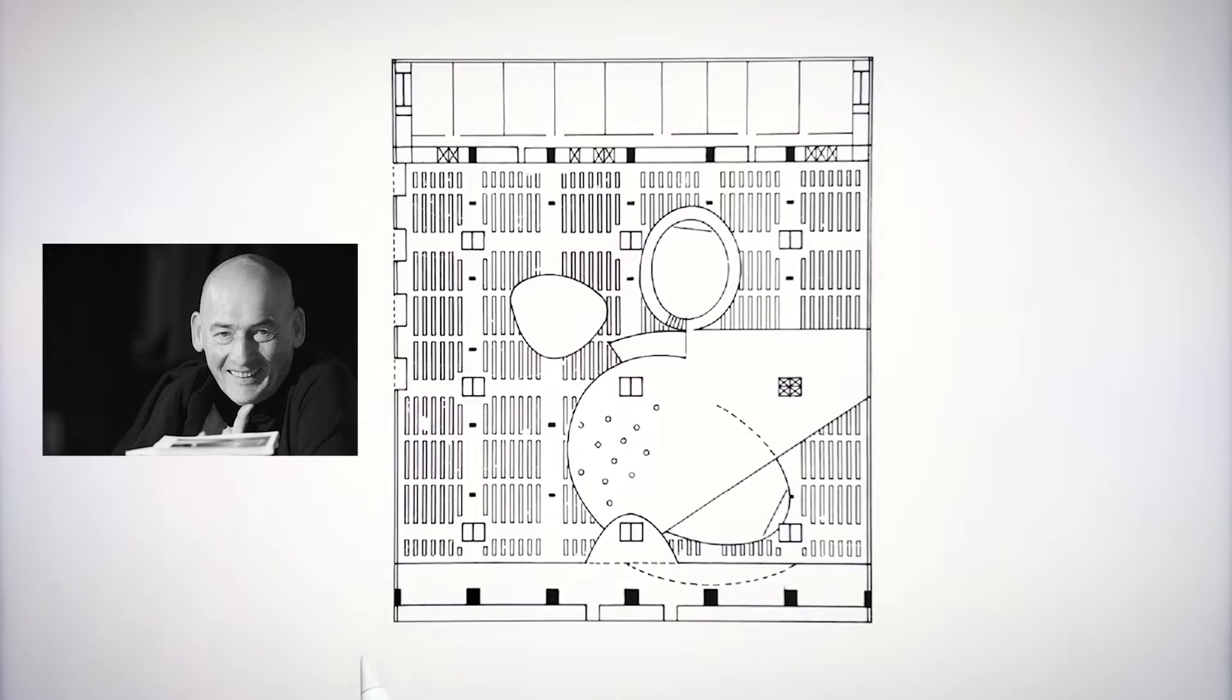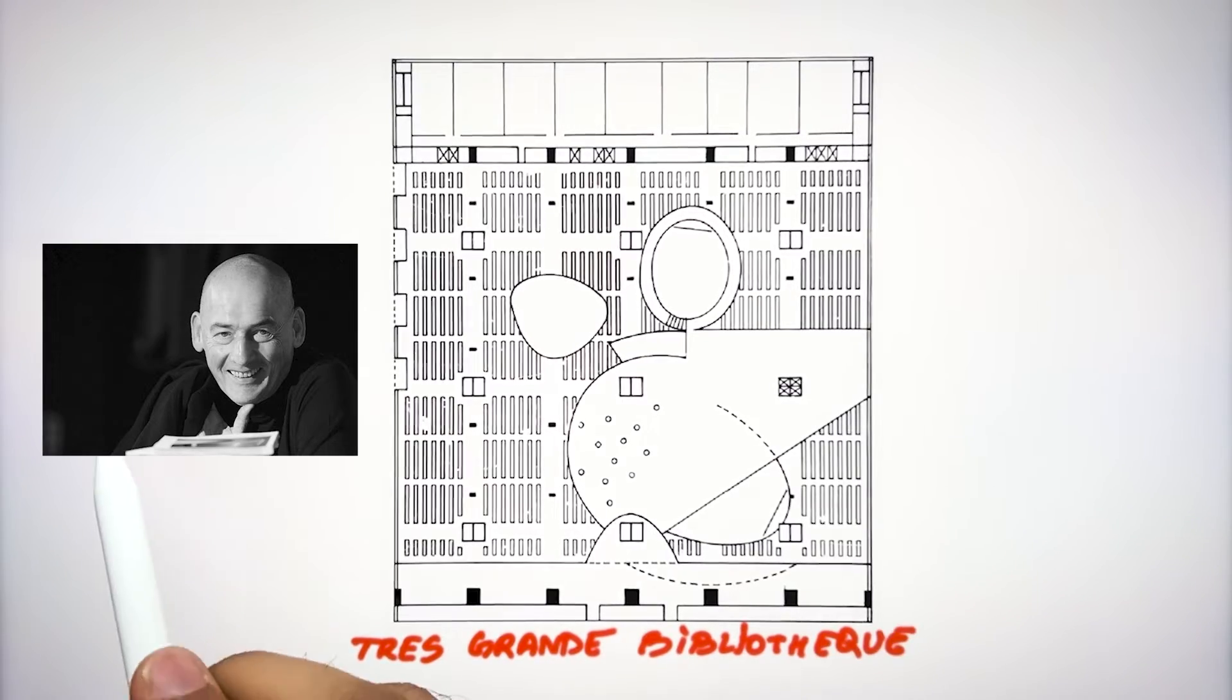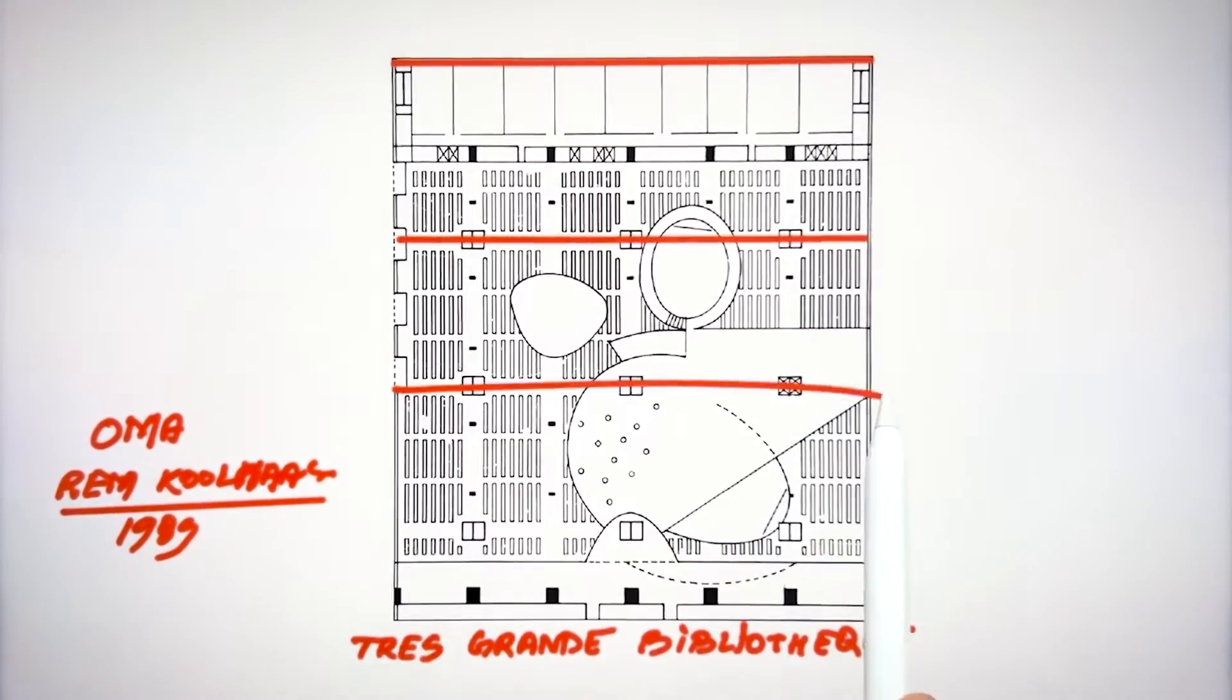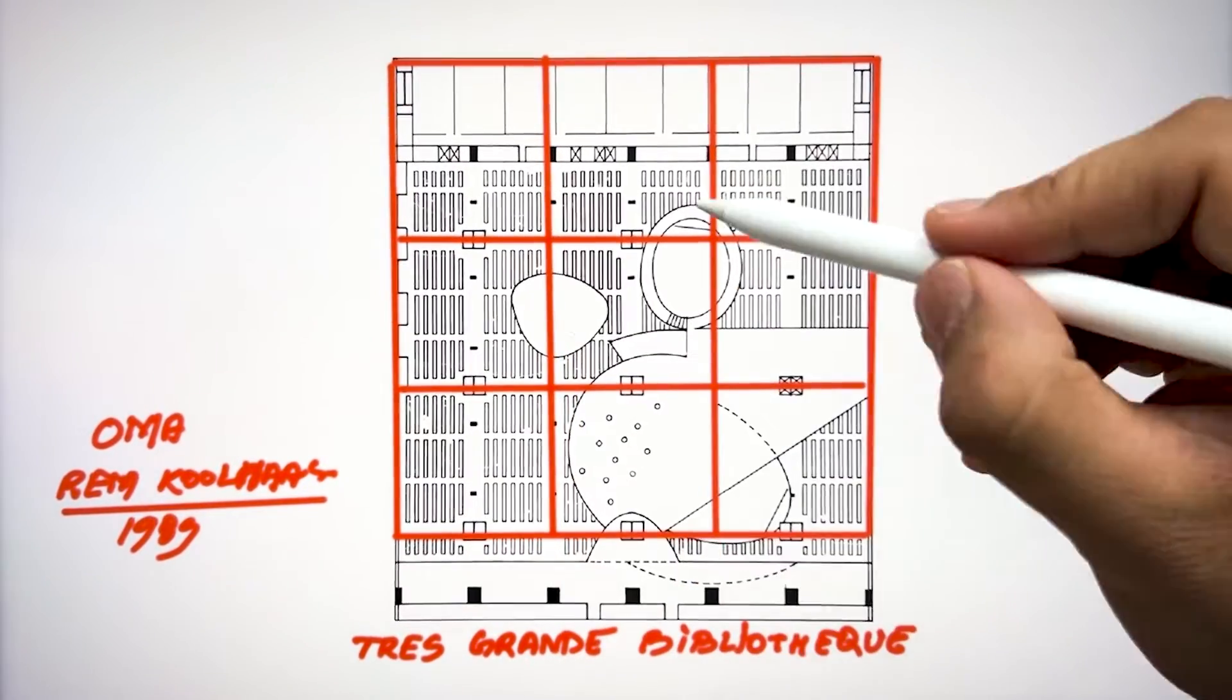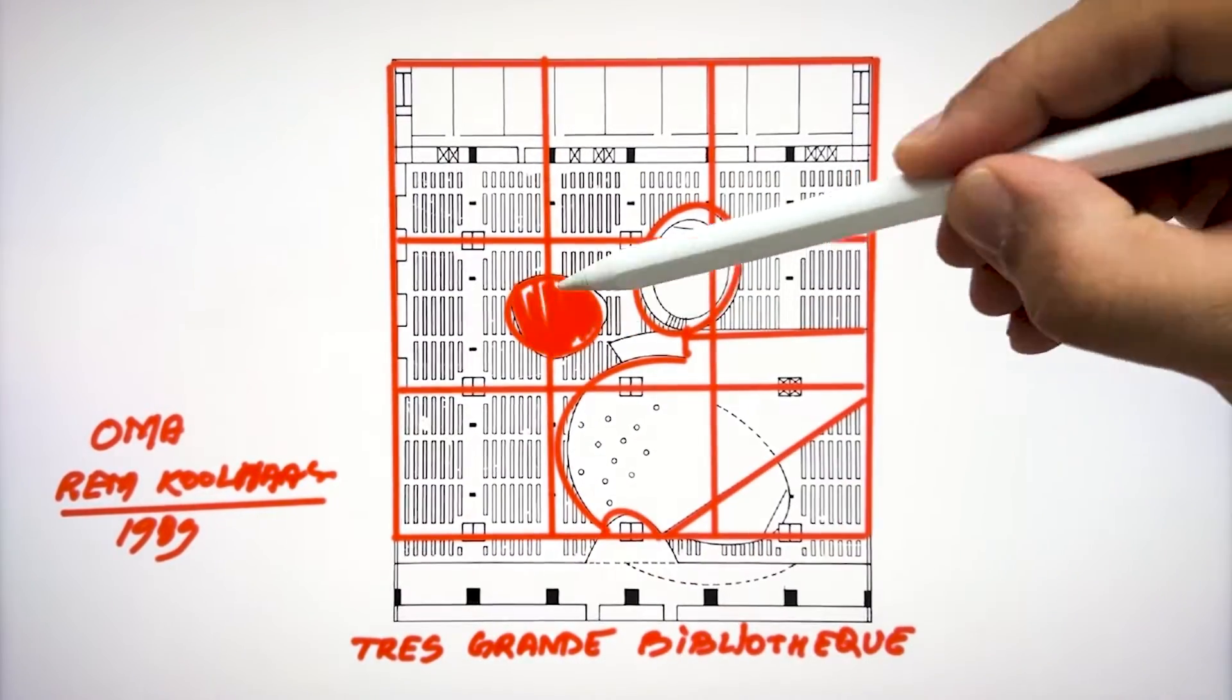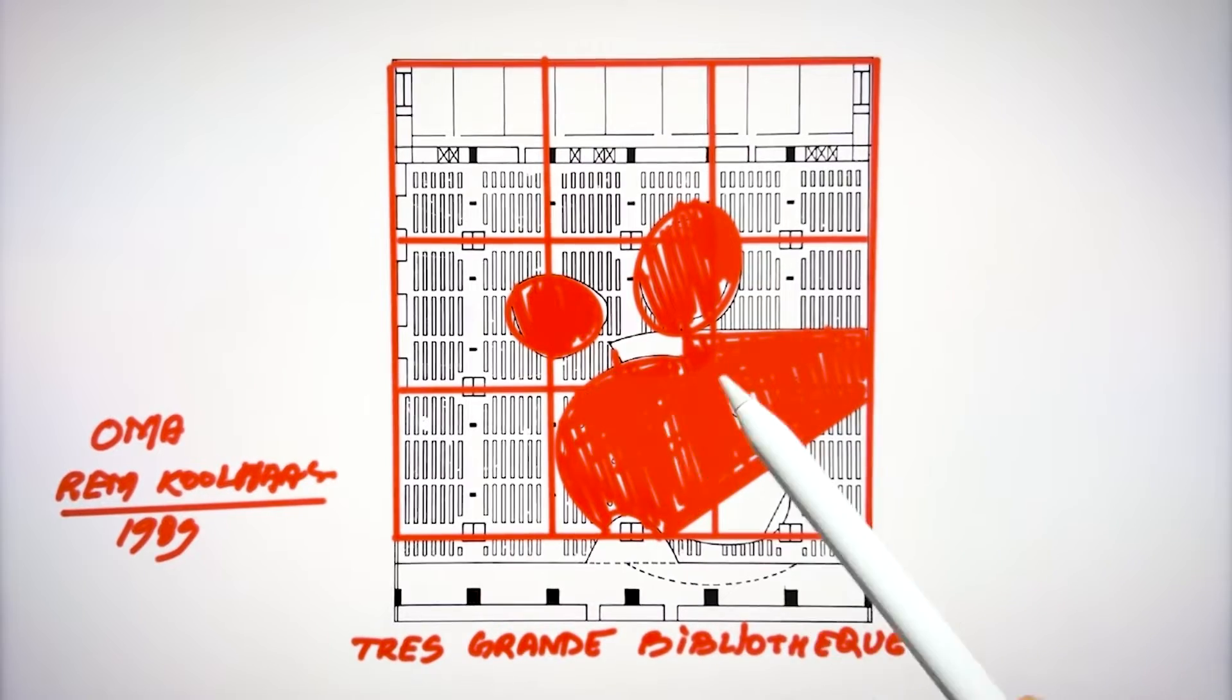In 1989, Rem Koolhaas designed Très Grande Bibliothèque which was a library and which follows the system of nine grid. Here Rem Koolhaas changed the shape of the space by adding these curvilinear walls. But the main idea follows the concept of nine grid.